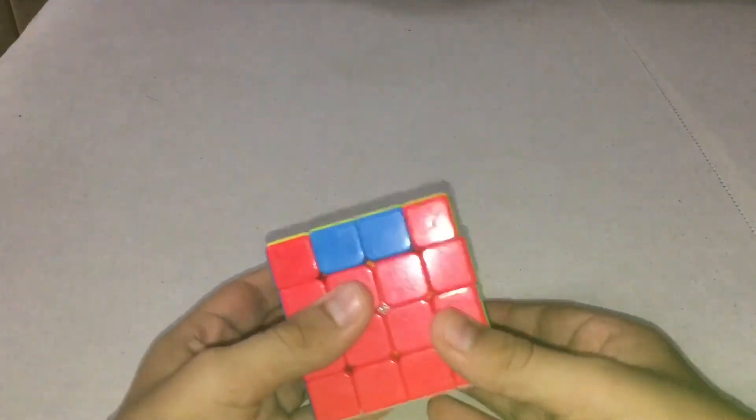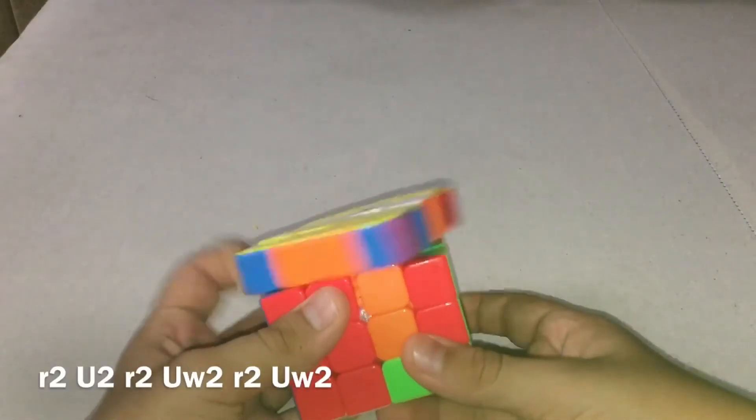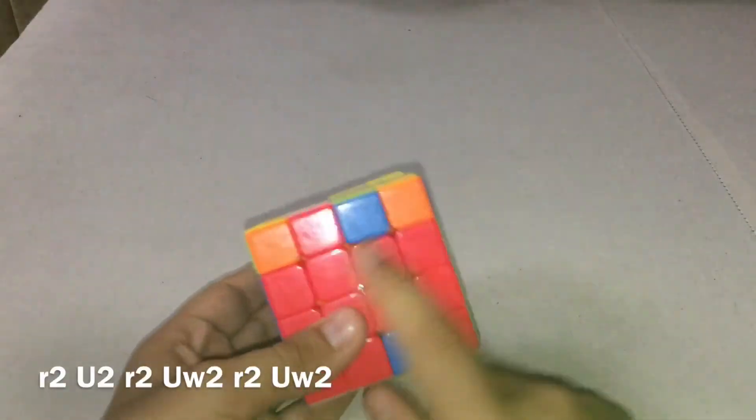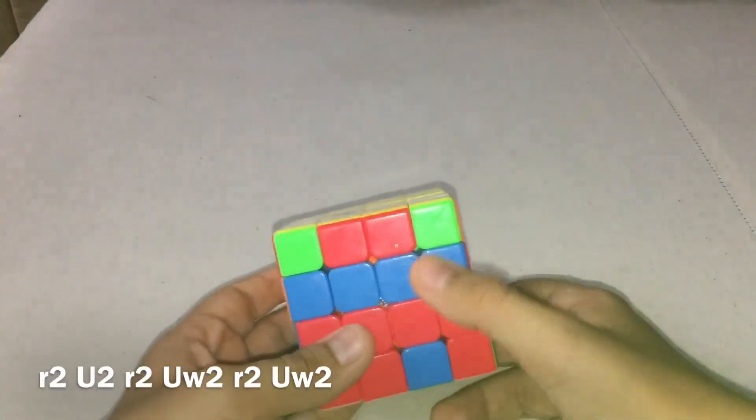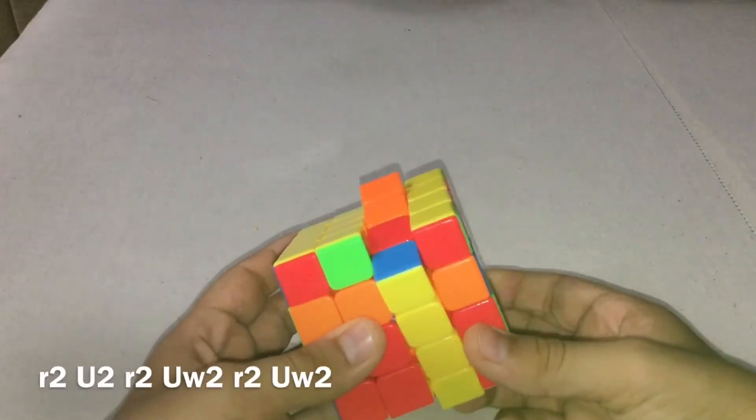Which is just R2, D slice twice, U2, R2 again, slice twice, and then this middle layer Uw2, like the two layers at a time, and then do this slice, R2 again.